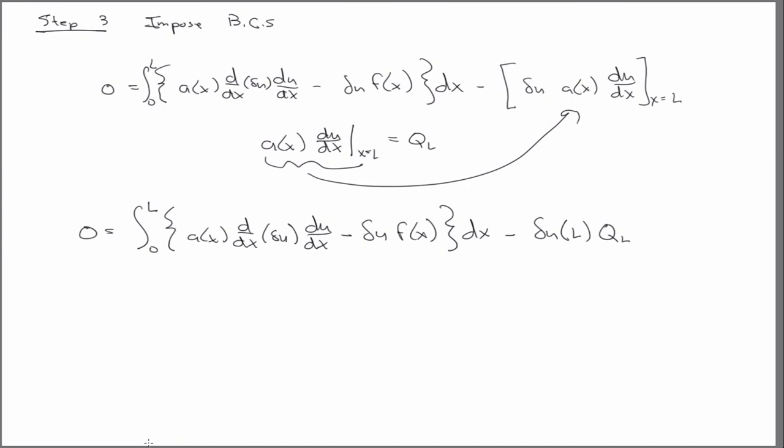All right, so this is the so-called weak form. It's also a variational form. So I think a lot of people use these interchangeably. I like to be more specific because the variational form is also the weighted residual form. What differentiates the two is when you actually perform the integration by parts, weakening the continuity requirement on u. That gives you the weak form.